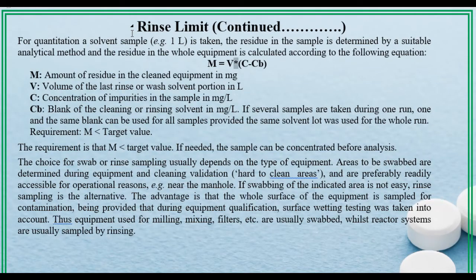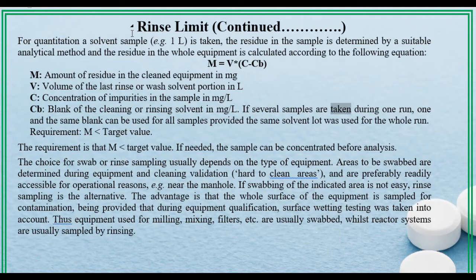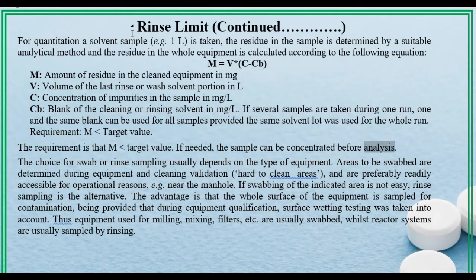The equation is: M = V × (C − Cb), where M is the amount of residue in the cleaned equipment in mg; V is the volume of the last rinse or wash solvent portion in L; C is the concentration of impurities in the sample in mg/L; and Cb is the blank of the cleaning or rinsing solvent in mg/L. If several samples are taken during one run, one and the same blank can be used for all samples provided the same solvent lot was used for the whole run. The requirement is that M ≤ target value. If needed, the sample can be concentrated before analysis.